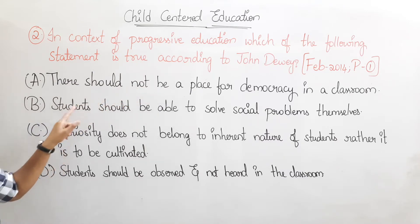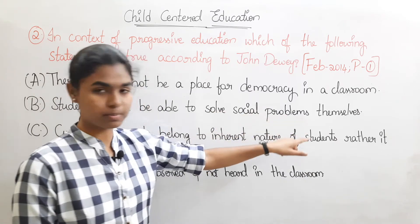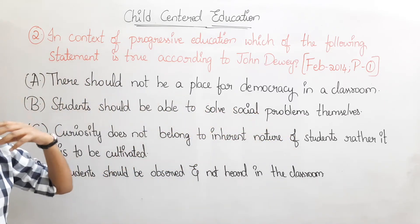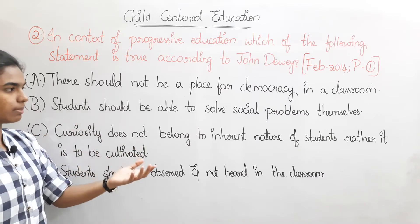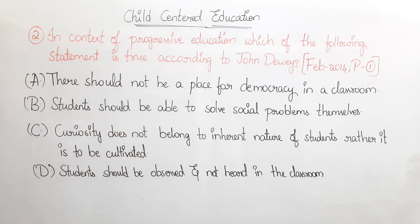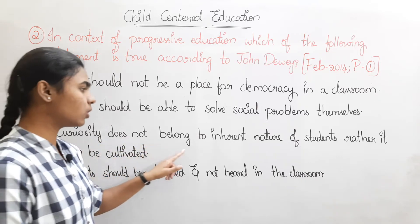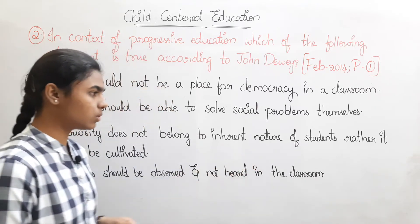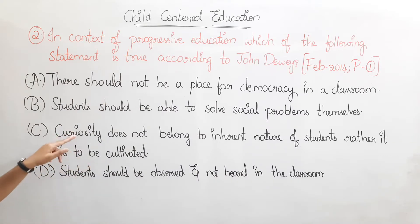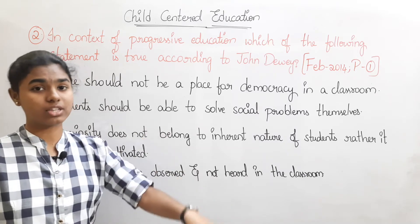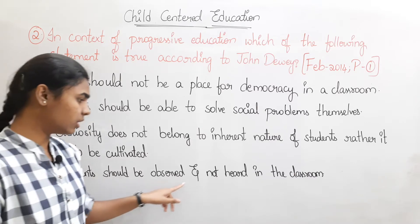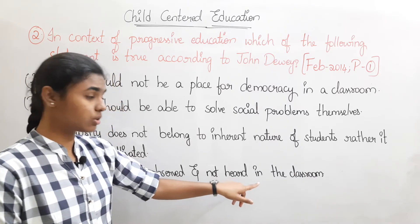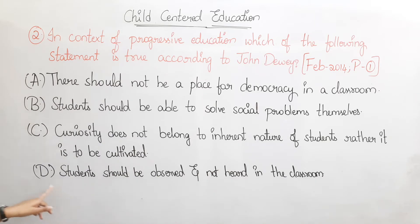Option B: students should be able to solve social problems themselves. Option C: curiosity does not belong to the inherent nature of students — rather it is to be cultivated. Option D: students should be observed and not heard in a classroom — that is, children should not have a chance to talk.